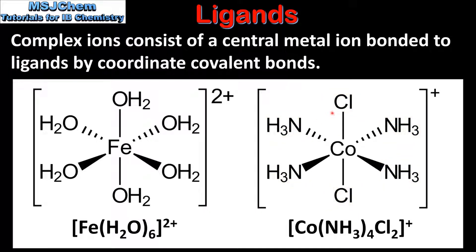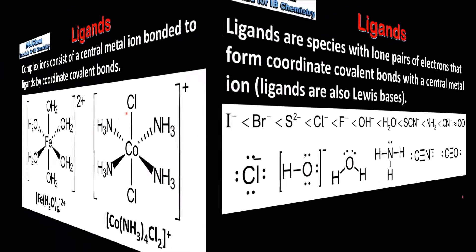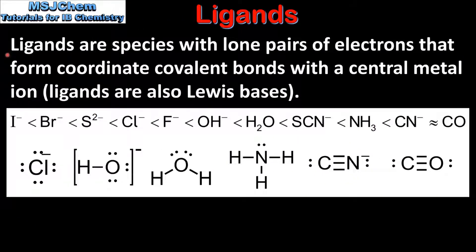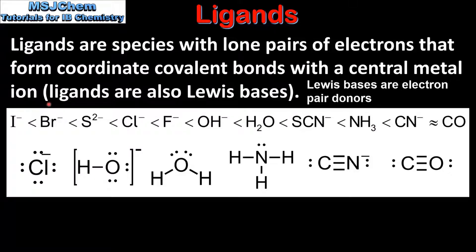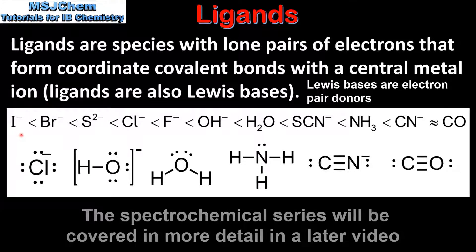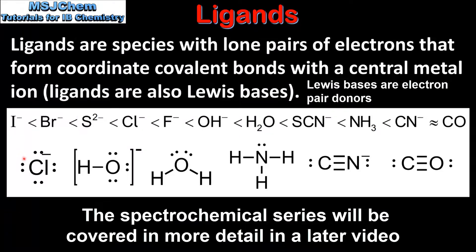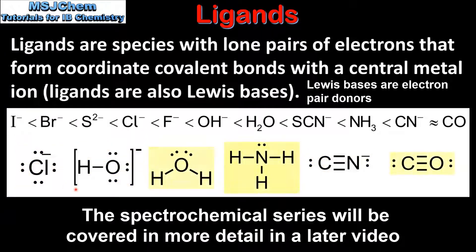Next we'll look at ligands in more detail, starting with a definition. Ligands are species with lone pairs of electrons that form coordinate covalent bonds with a central metal ion. Ligands are also Lewis bases. Here we can see the spectrochemical series together with the Lewis structures of some of the ligands. Some ligands are negative ions whereas others are neutral molecules, but they all have in common the presence of lone pairs of electrons.